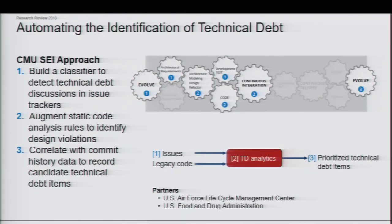Our approach has been three-pronged, looking into different artifacts and combining them. We focused on building a classifier that can help detect technical debt discussions from conversations developers might have or from their issue trackers and tickets. This has a benefit in terms of understanding where you may need to focus effort or how to incentivize developers to move forward. Software development is not necessarily a stage-wise activity — it's like gears that help each other move forward.